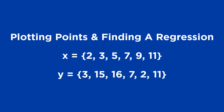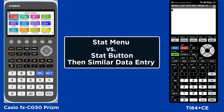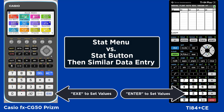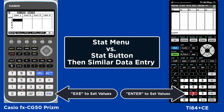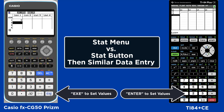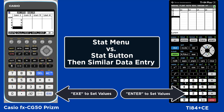In the CASIO you're going to go into the STAT menu, and in the TI you're going to hit the STAT button. This will create list entry for you and it's very similar data entry for both calculators. You hit execute to set values in the CASIO and enter to set values in the TI.